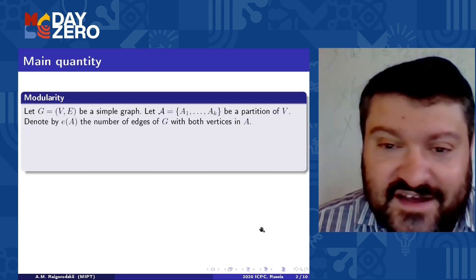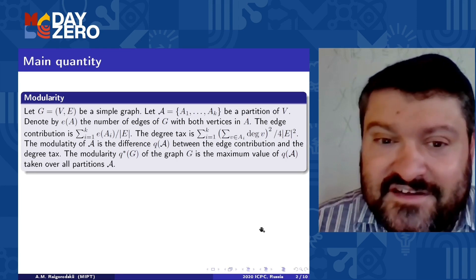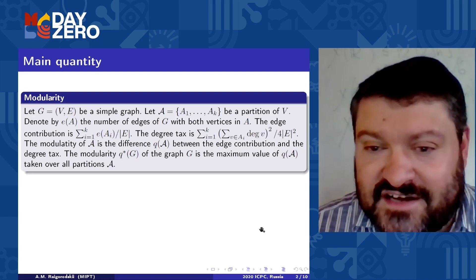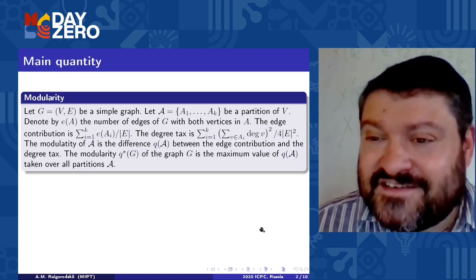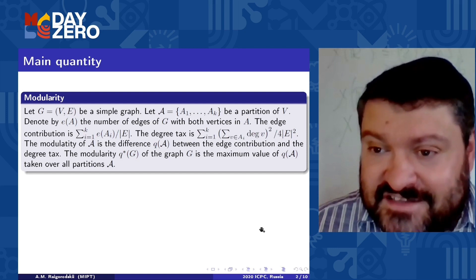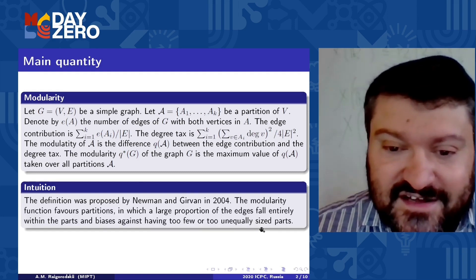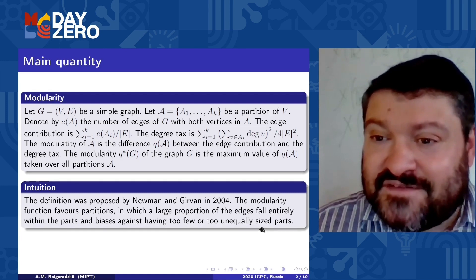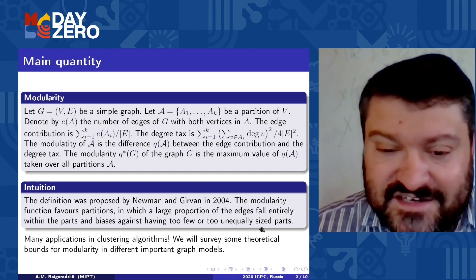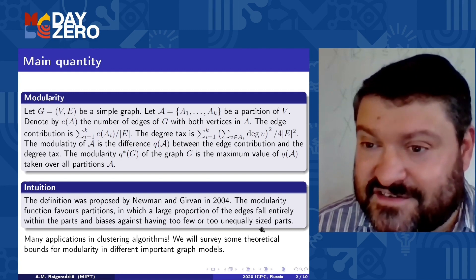So the main quantity, you of course know it, is the difference between the two values which are written down here. We consider some partition, we denote by E of E the number of edges of G with both vertices in A, the H contribution. You know this long and difficult formula which had to be optimized, but we are interested in finding the maximum value of this quantity, the maximum value over all possible partitions of the ground set of vertices. The intuition you already know. Stanislav told you something about it. It has many applications in clustering algorithms, and I suppose to survey some theoretical bounds for modularity in different important graph models.